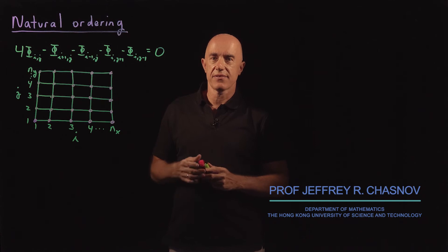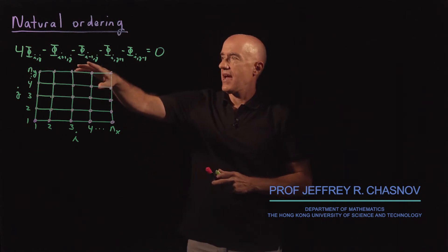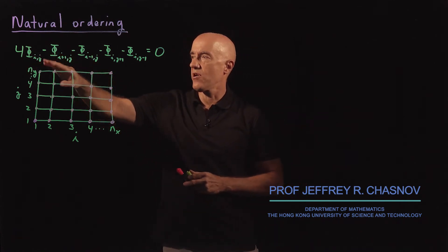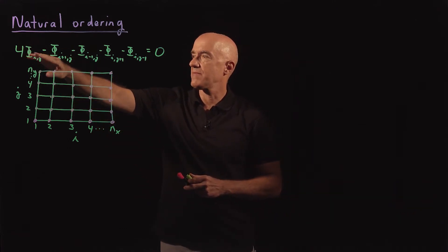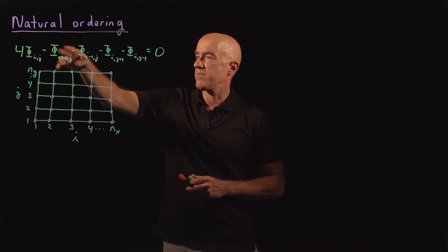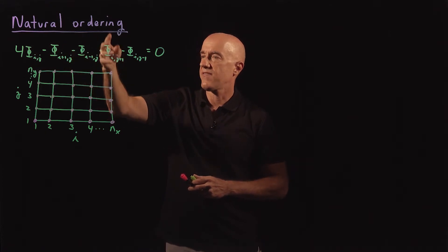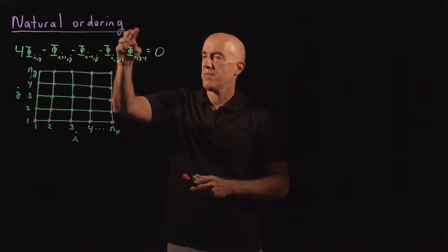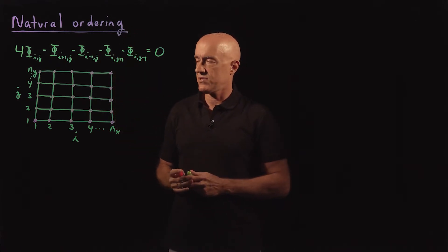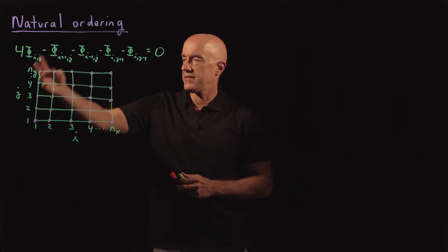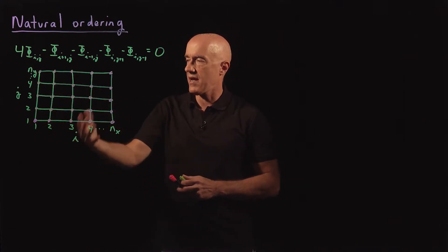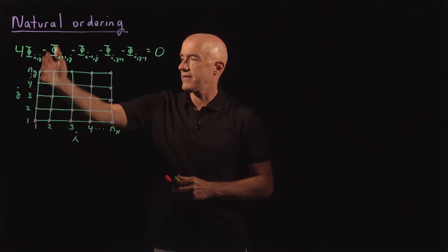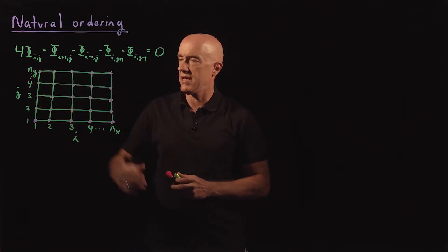We've discretized the Laplace equation, and we get this equation for phi on this two-dimensional grid. 4 times phi i j minus phi i+1 j minus phi i-1 j minus phi i j+1 minus phi i j-1 equals 0. Here is a schematic of our grid, the x-direction being the i-index, the y-direction being the j-index.